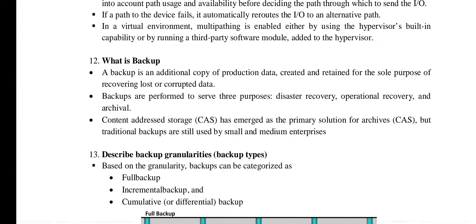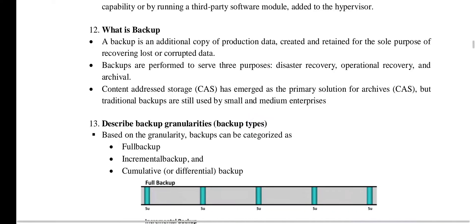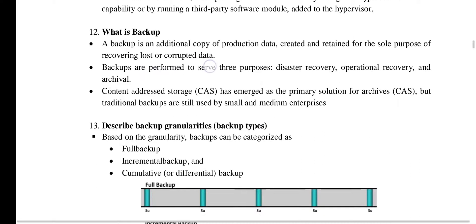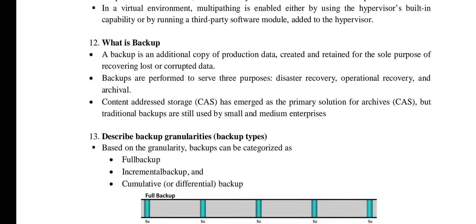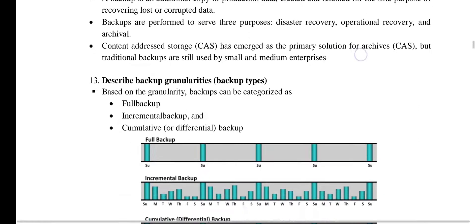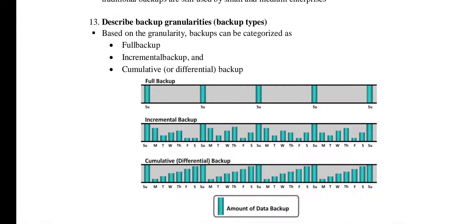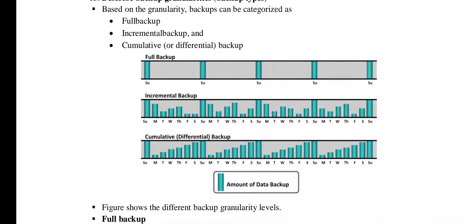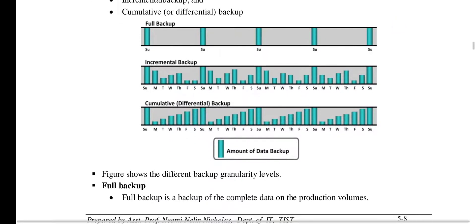Backup is an additional copy of the production data, created and retained for the sole purpose of recovering the data in case any corruption occurs. The main backup types, or granularities, are: full backup, incremental backup, and cumulative backup.